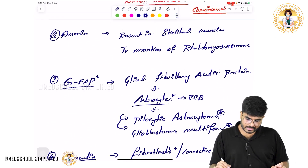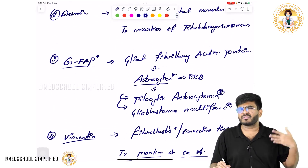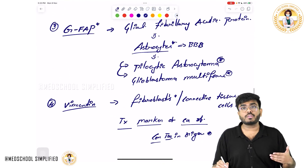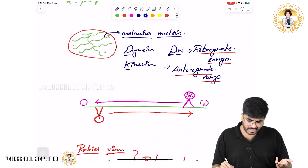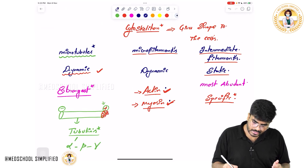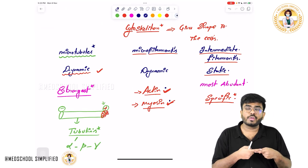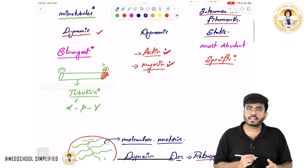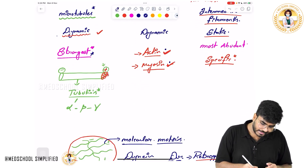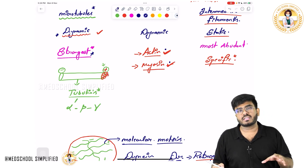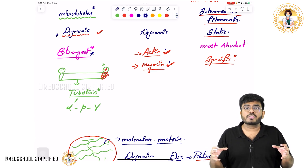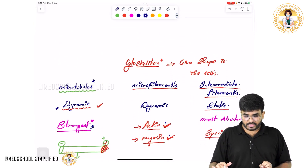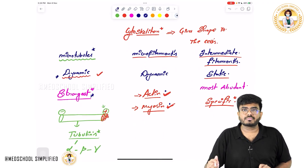In summary, intermediate filaments — which are the most abundant — include keratin, desmin, GFAP, and vimentin, and they are specific to different cell types. Microfilaments are actin and myosin — present in all cells, giving structural integrity. Microtubules are the strongest and dynamic, and they are not only giving shape and structure to the cell but are also involved in cell division and cellular transport via anterograde and retrograde cargo. With this, we have completed the topic of cytoskeleton. Hope the video is helpful, thank you.